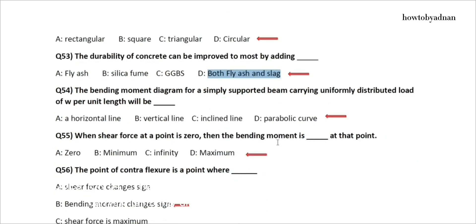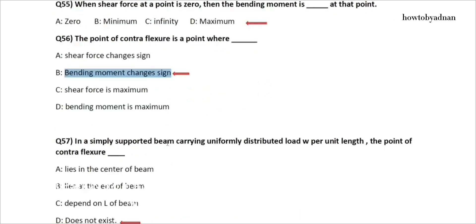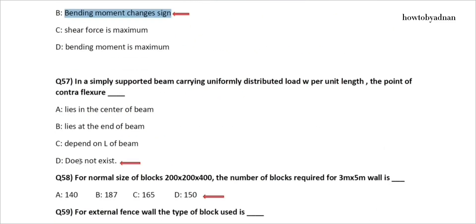Question 54: The bending moment diagram for a simply supported beam carrying uniformly distributed load of W per unit length will be? The answer is option D: Parabolic curve. Question 55: When shear force at a point is zero, then the bending moment is what at that point? The answer is option D: Maximum. Question 56: The point of contraflexure is a point where? The answer is option B: Bending moment changes sign.